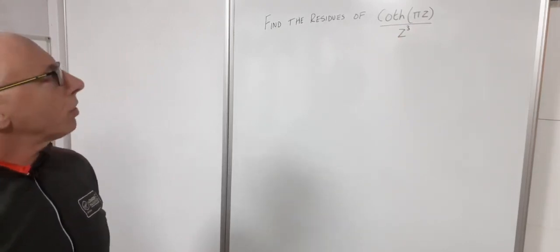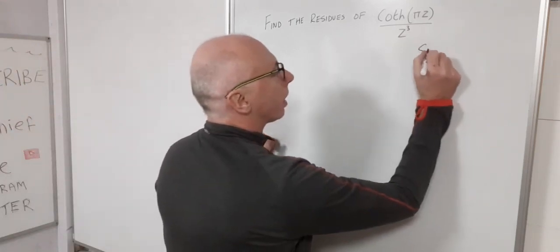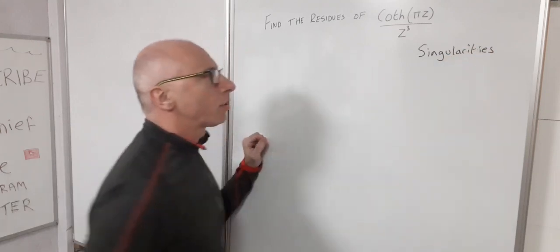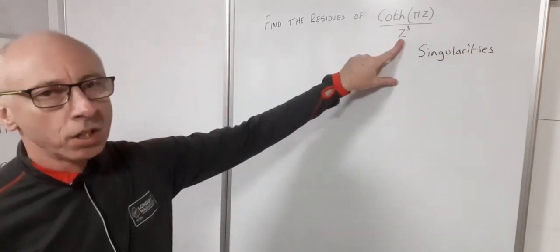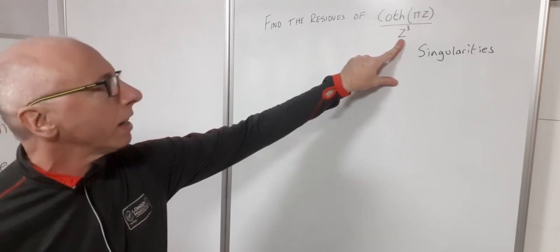So our first goal when trying to find the residues is to find the singularities. So let's just list our singularities. Now straight away with the denominator z cubed we'll know that there's three singularities or a singularity at z equals zero.